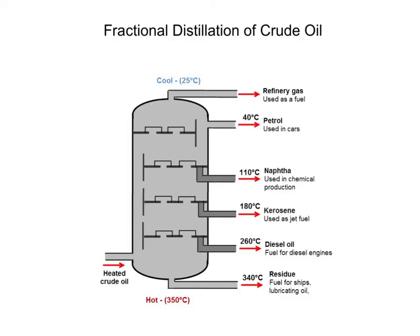Now crude oil itself is a mixture of what are called hydrocarbons. And that's where this process comes in. What I've got in the middle of the screen here is a fractioning column. Fractional distillation only differs from normal distillation in that it allows us to separate a mixture into a number of different parts or fractions.